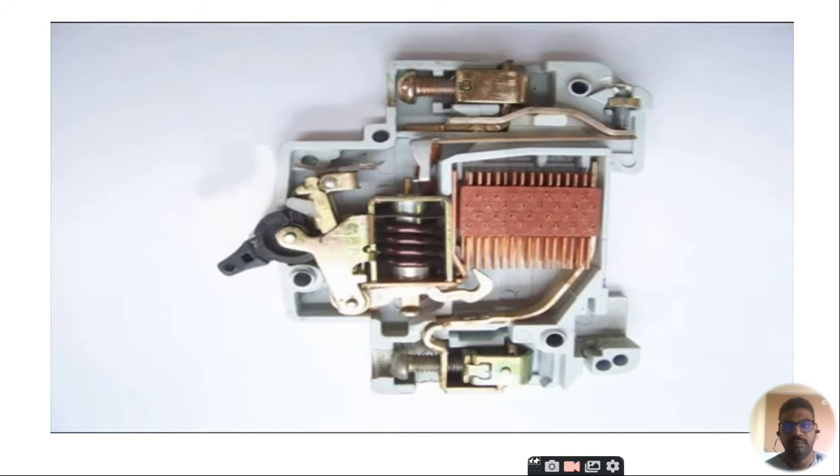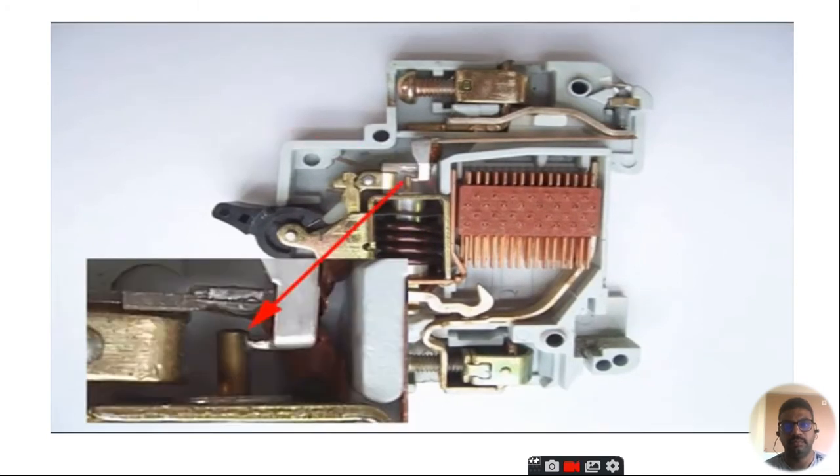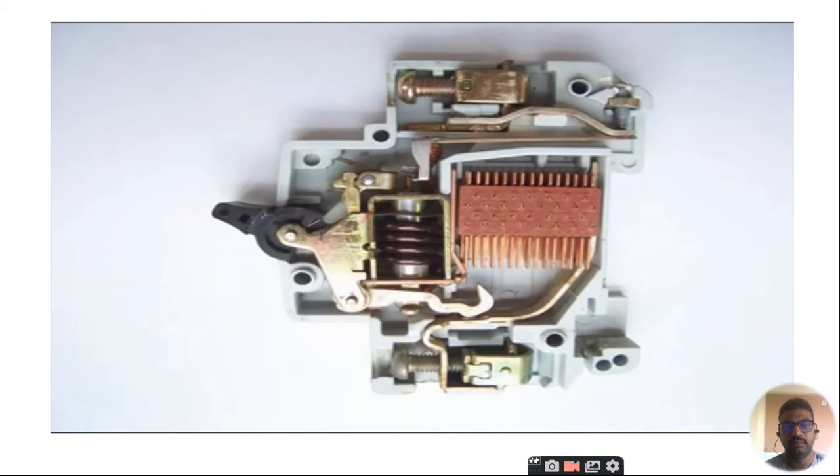The current coil is placed such that during short circuit fault, the MMF of that coil causes its plunger to hit the same latch point and make the latch to be displaced. Hence, during short circuit fault, the MCB will open in the same manner.